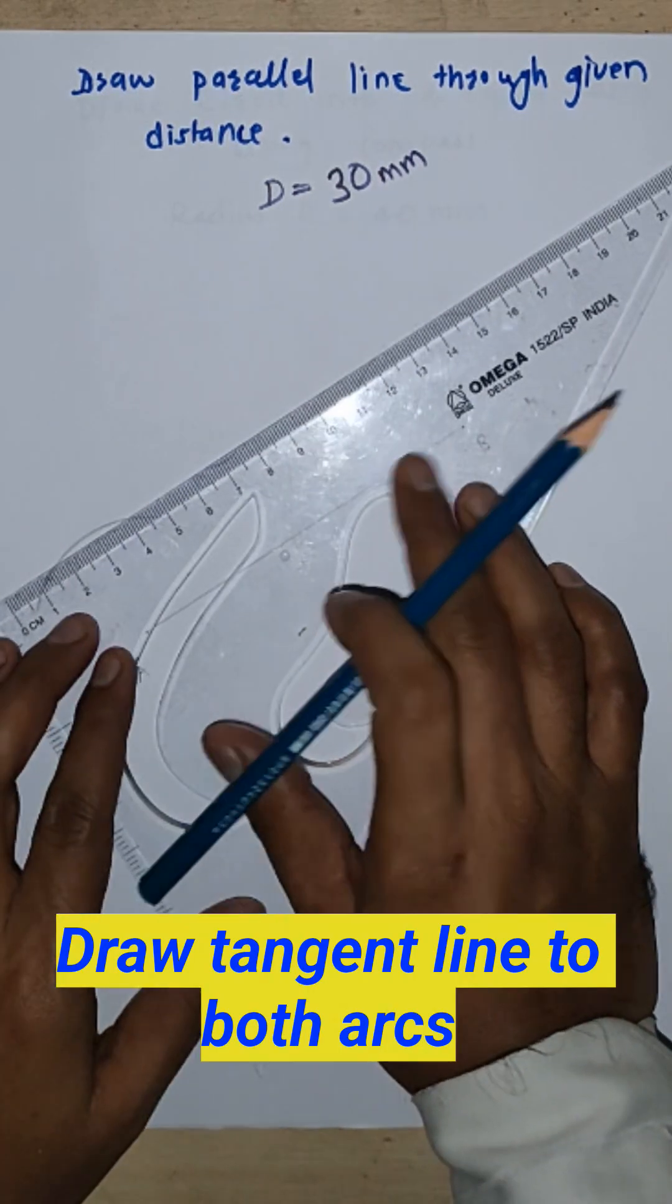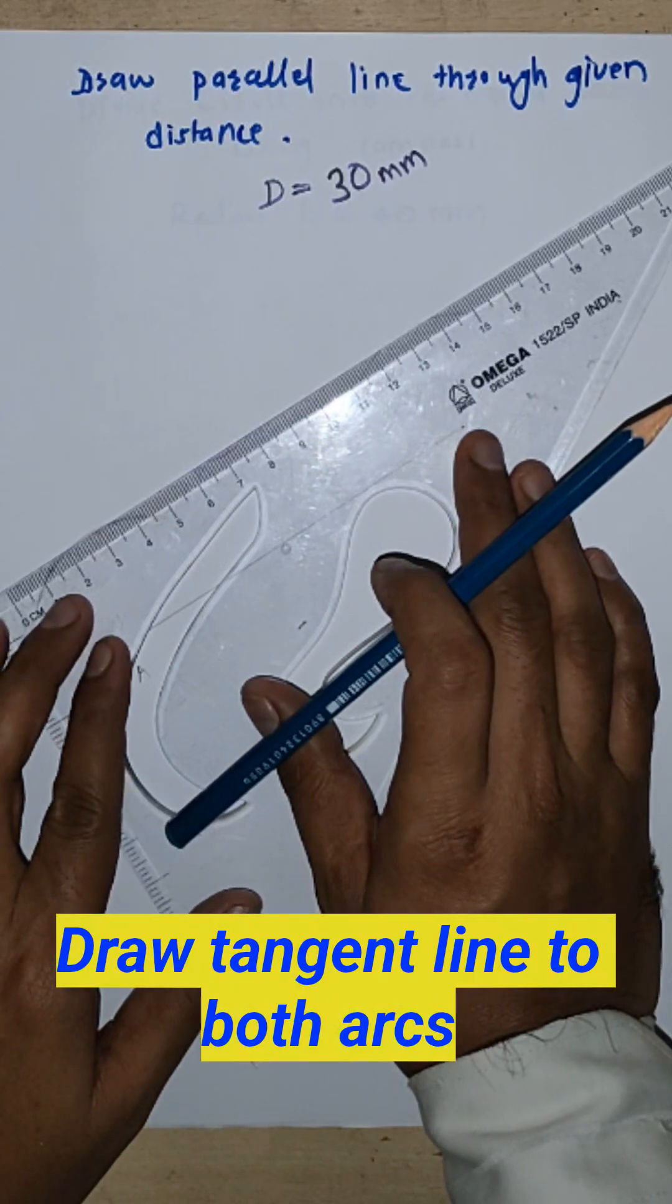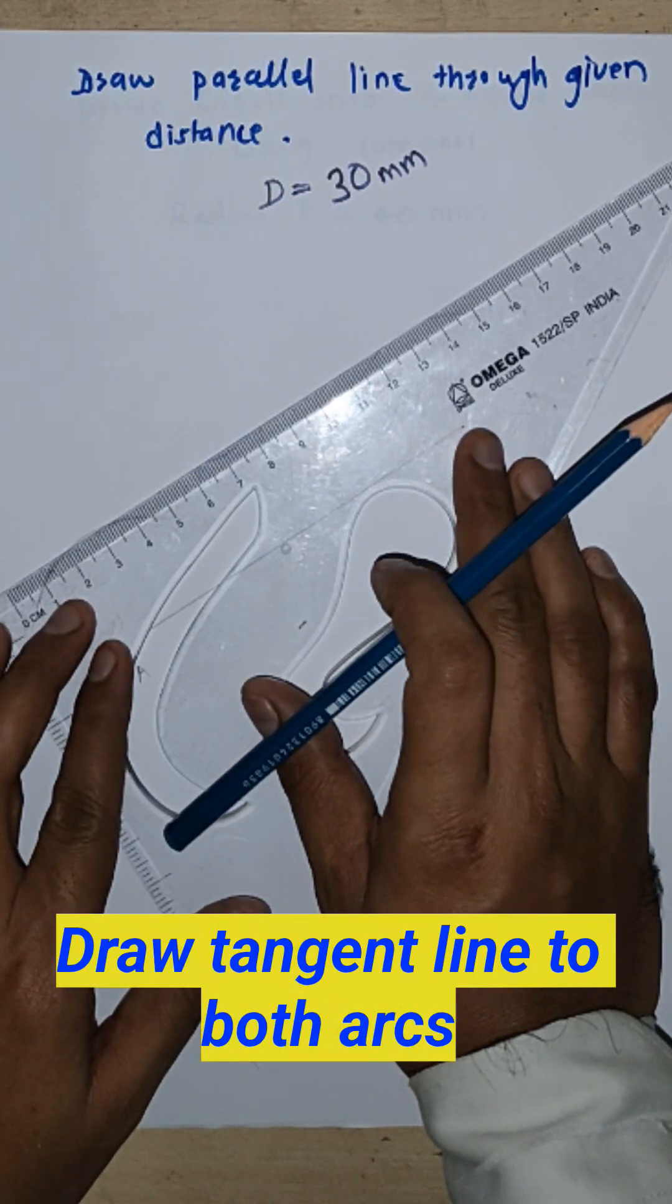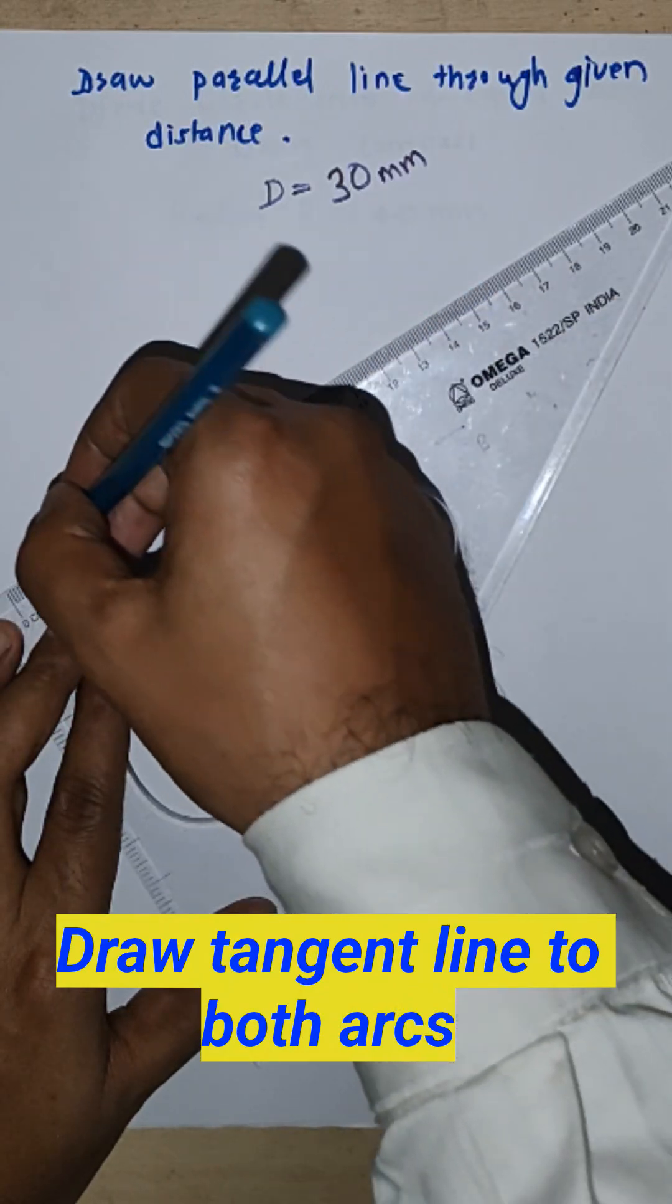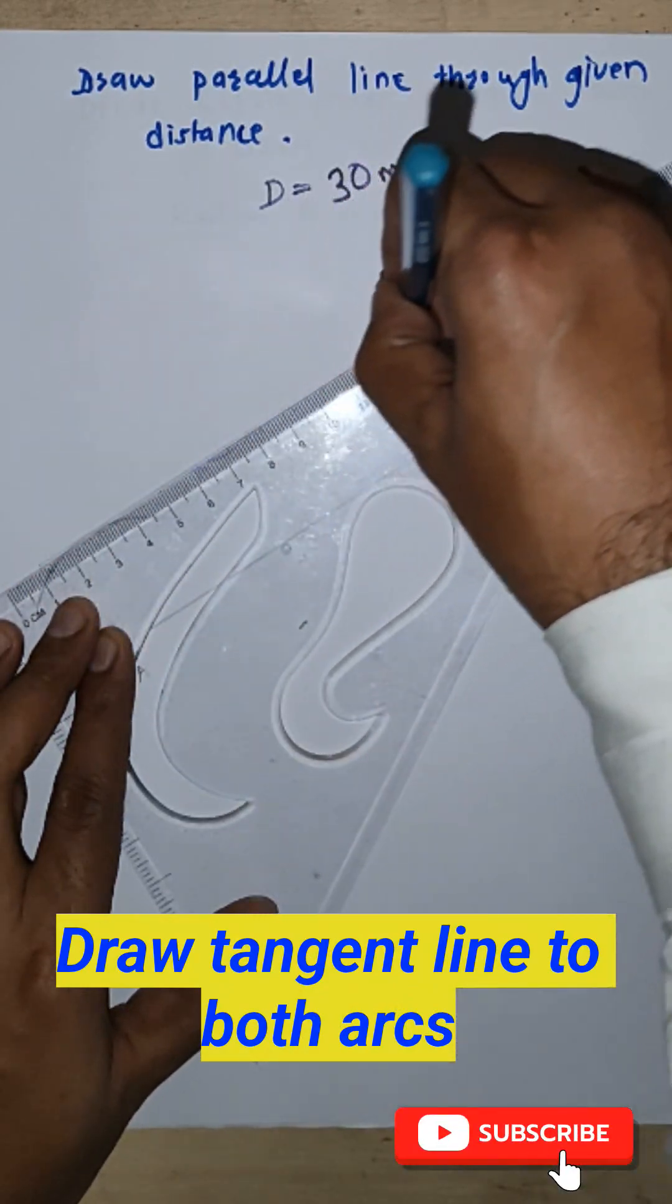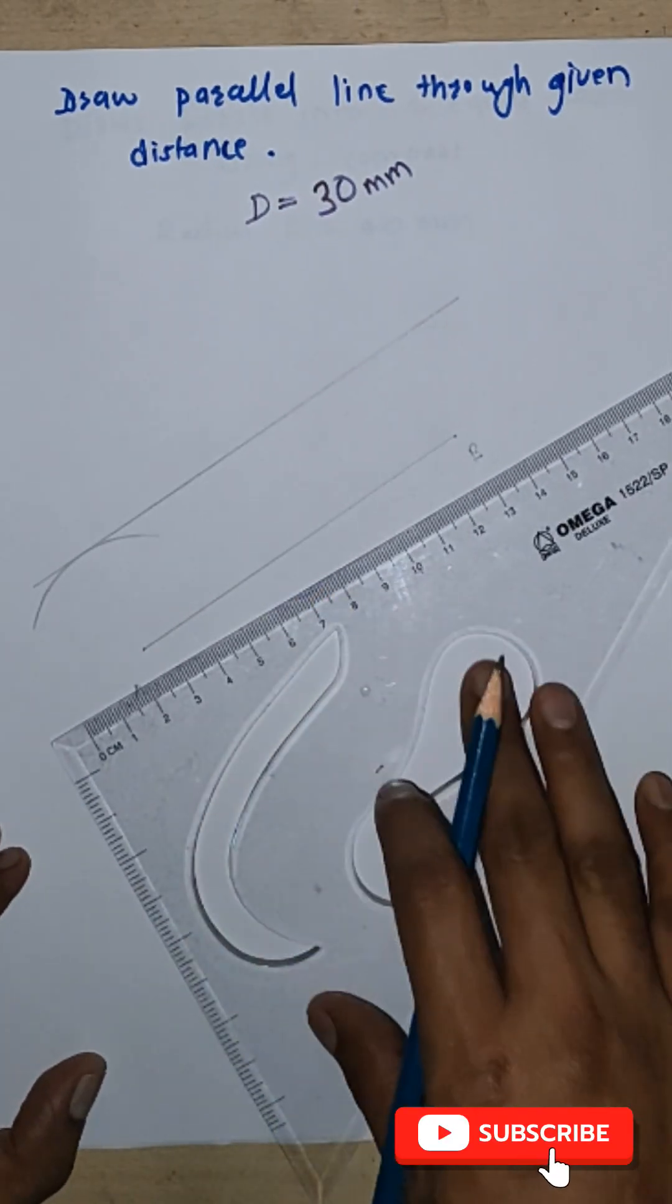Draw a tangent line to these arcs. A tangent line is a line which will touch the arc at one point only. This is our parallel line.